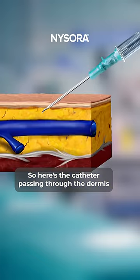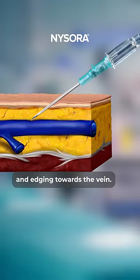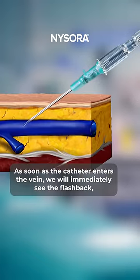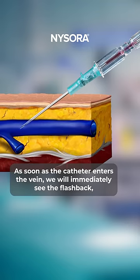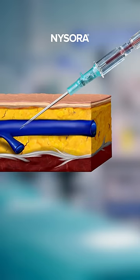Here's the catheter passing through the dermis and edging towards the vein. As soon as the catheter enters the vein, we will immediately see the flashback — as we call it — because the blood will want to go into the expansion chamber.